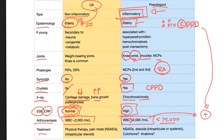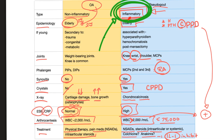Treatment: for osteoarthritis — physical therapy, pain medications, and intra-articular steroids. Systemic steroids are rarely used. For pseudogout — NSAIDs, steroids (intra-articular or systemic), colchicine, and anakinra. Anakinra is an interleukin-1 inhibitor. Interleukin-1 is responsible for inflammation, which is why inhibiting it helps in pseudogout.